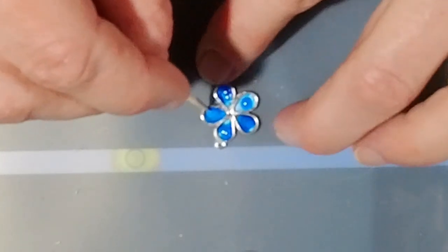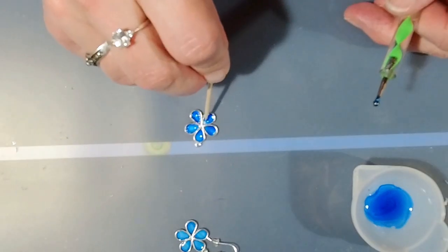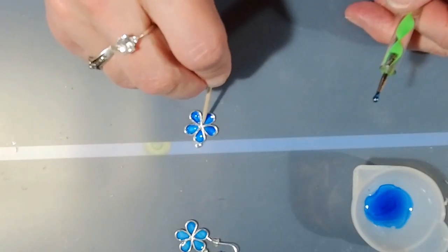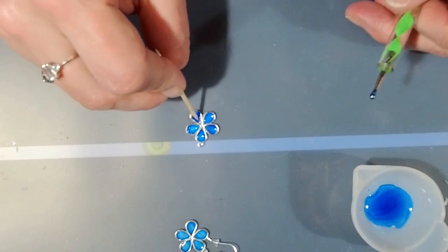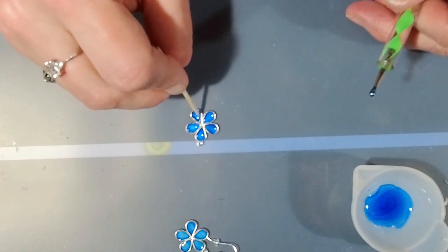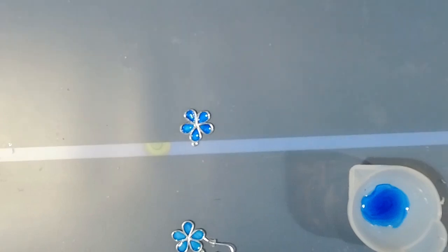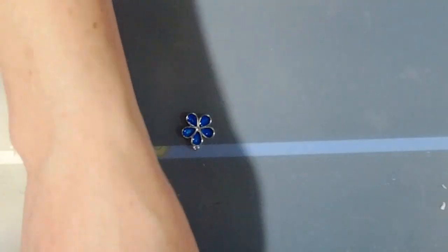Spread it around with the toothpick. Push it in the tip of the petal there. Wipe off your dotting tool. I use baby wipes. Spray it down with a little bit of rubbing alcohol. And then I'm going to do that with my UV light.